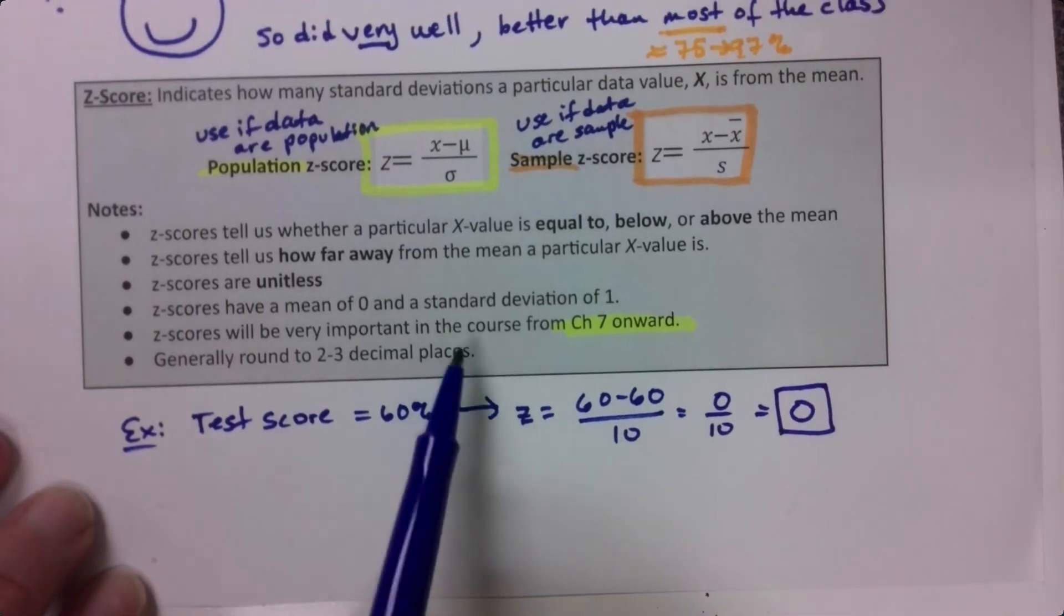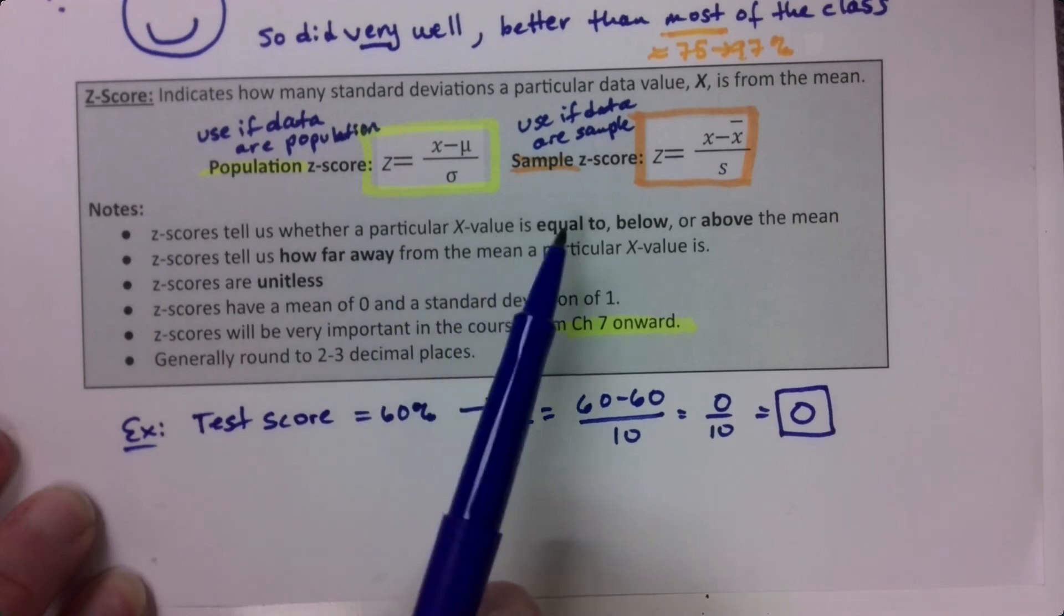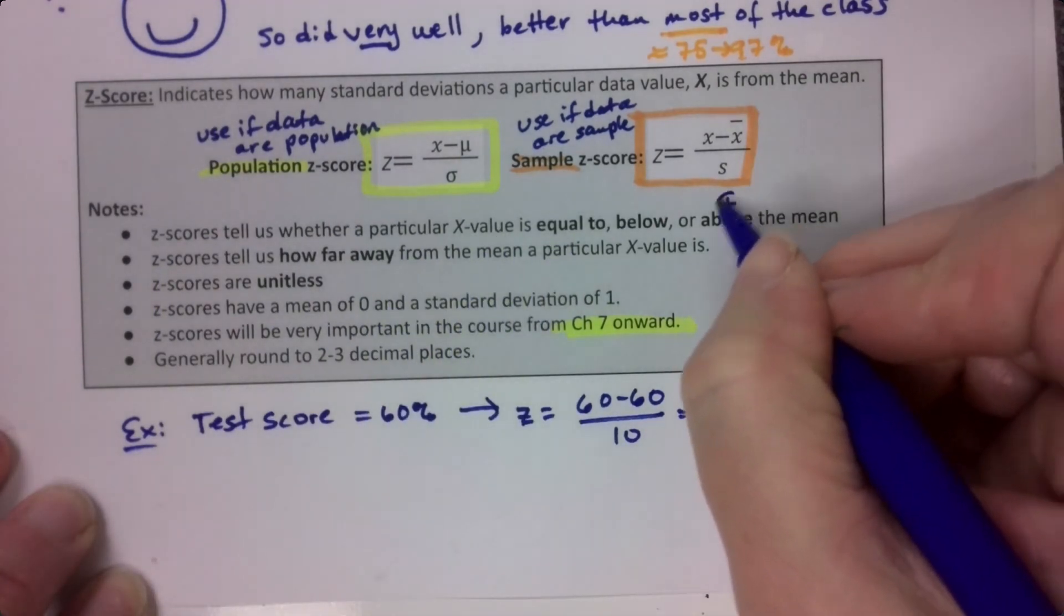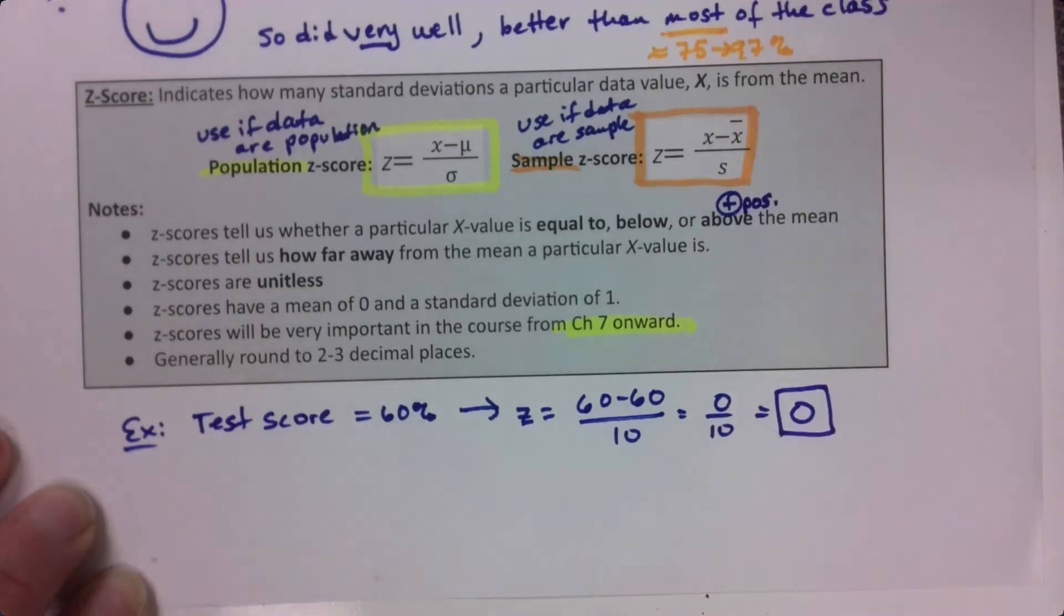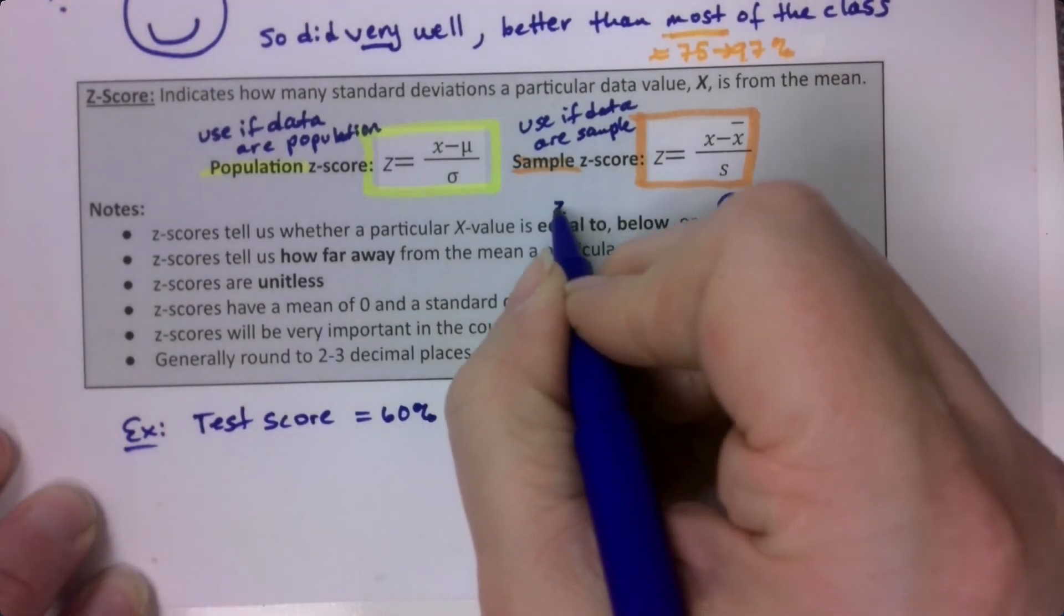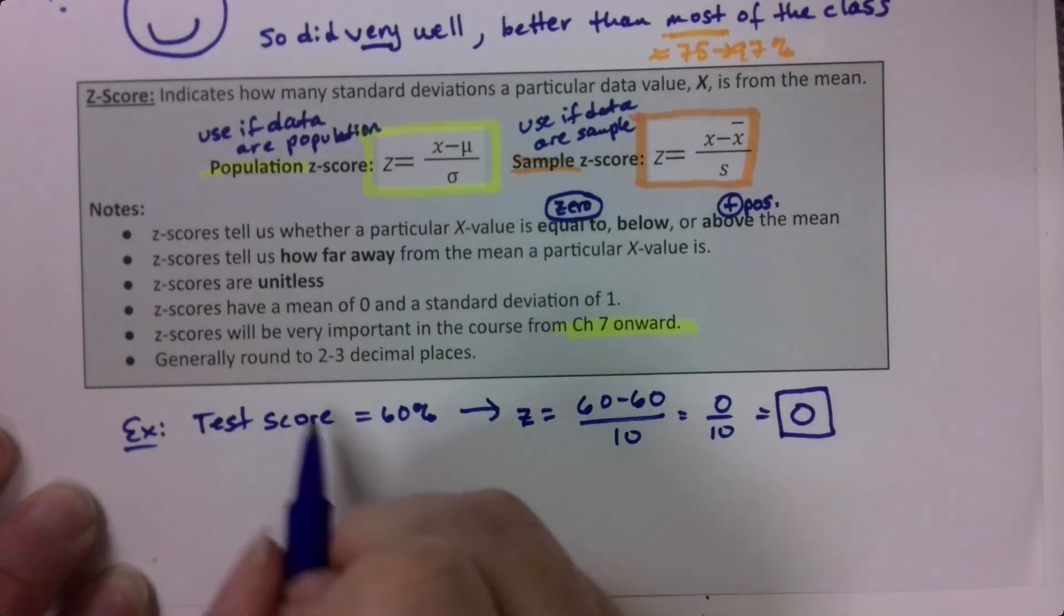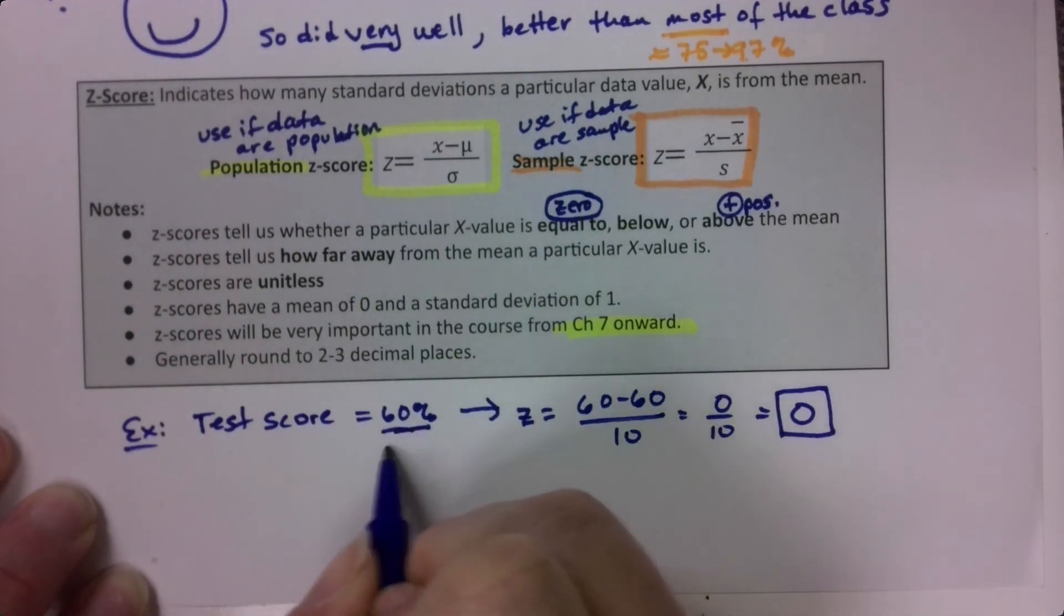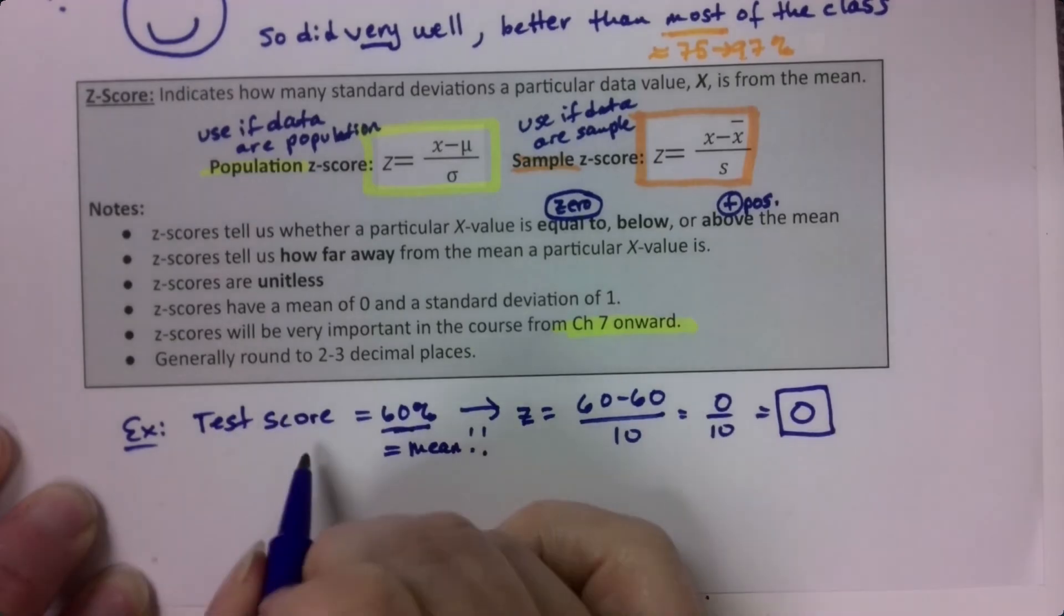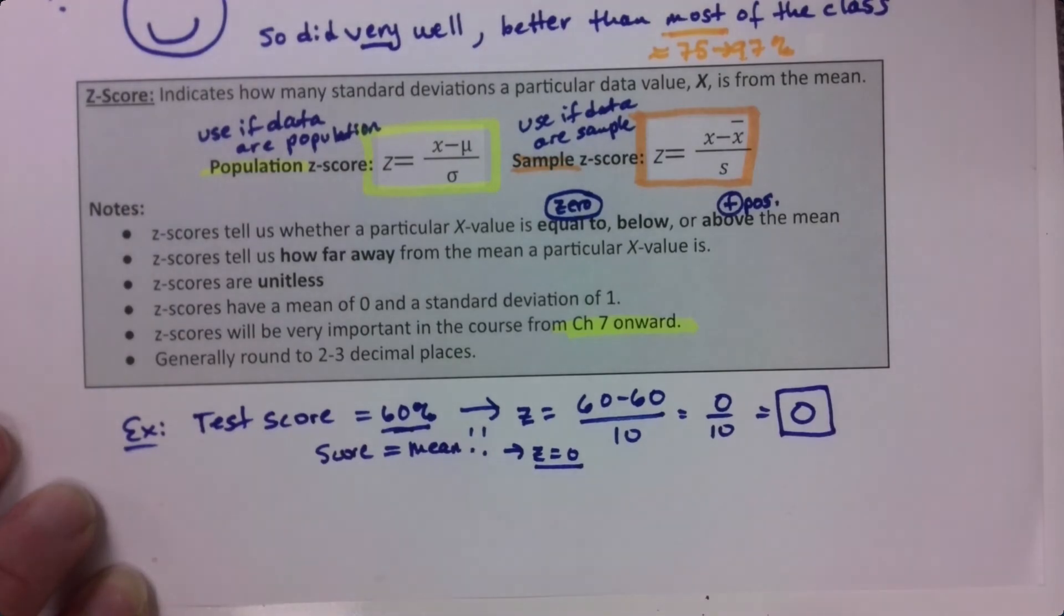Which leads us to know that a z-score can be positive if you score above the mean. If you score at the mean, your z-score is 0. So if your score is equal to the mean, then your z-score will be 0. That's what we just learned.